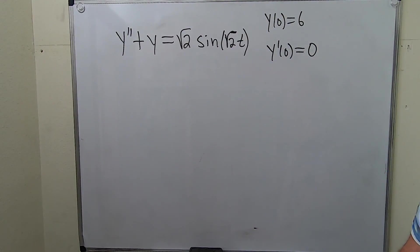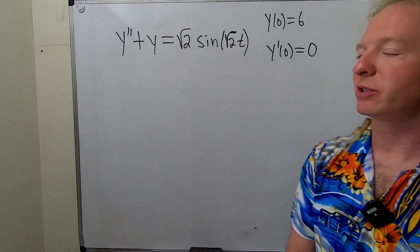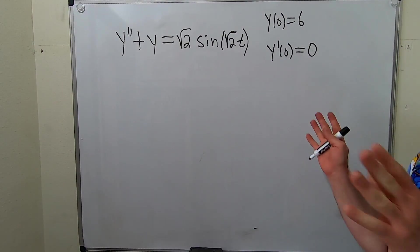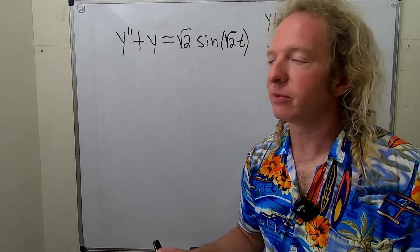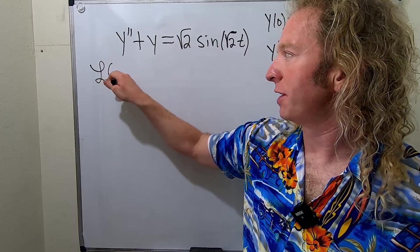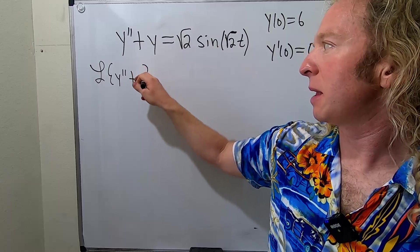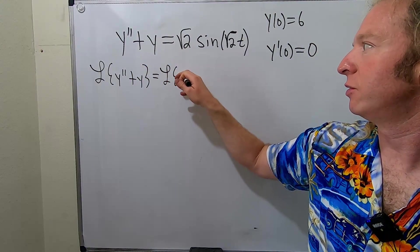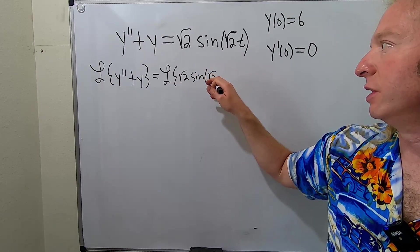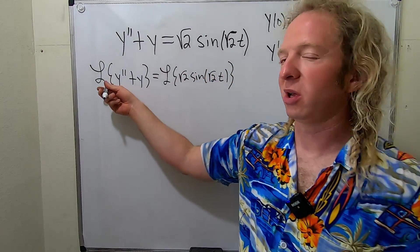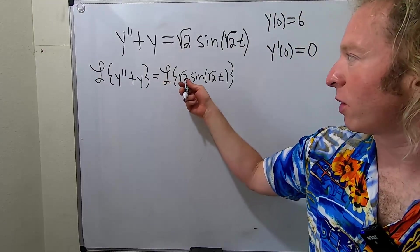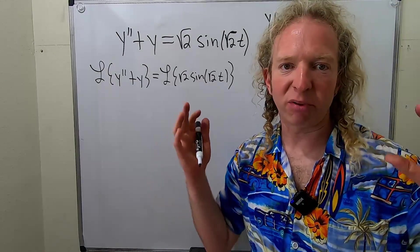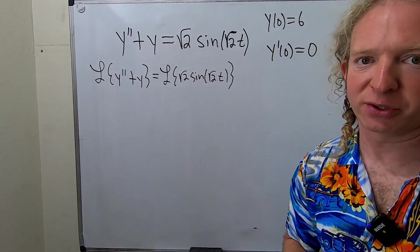In this video, we're going to solve this differential equation using Laplace transforms. In the method of Laplace transforms, the first thing you do is take the Laplace of both sides of the DE. Start off by taking the Laplace of y double prime plus y, and that's equal to the Laplace of the square root of 2 sine of square root of 2t. You could have skipped this step by distributing the Laplace through because it's linear. The very first step is to apply the Laplace transform to both sides of the differential equation.